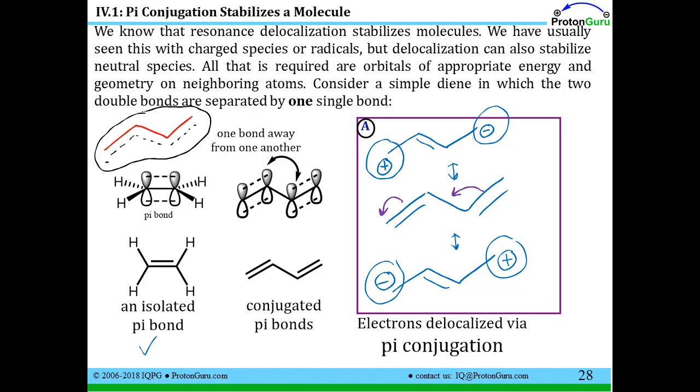delocalized all the way across the molecule. And these type of molecules featuring alternating pi bond, single bond, pi bond, single bond, are called pi conjugated molecules, and that's what this lesson's all about.